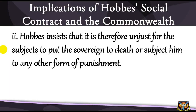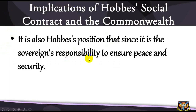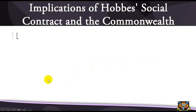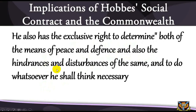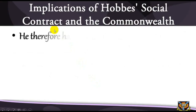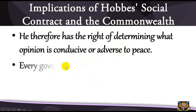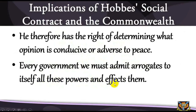Thirdly, it is also Hobbes's position that since it is the sovereign's responsibility to ensure peace and security, he also has the exclusive right to determine both the means of peace and defence and the hindrances and disturbances of the same, and to do whatever he shall think is necessary for the preservation of peace and security, and when peace and security are lost, for the recovery of the same. He therefore has the right of determining what opinion is conducive or adverse to peace. Every government we must admit arrogates to itself all these powers. The difference is a matter of degree — a dictator can go to any length, including violating the legitimate rights of citizens in its exercise of these powers.